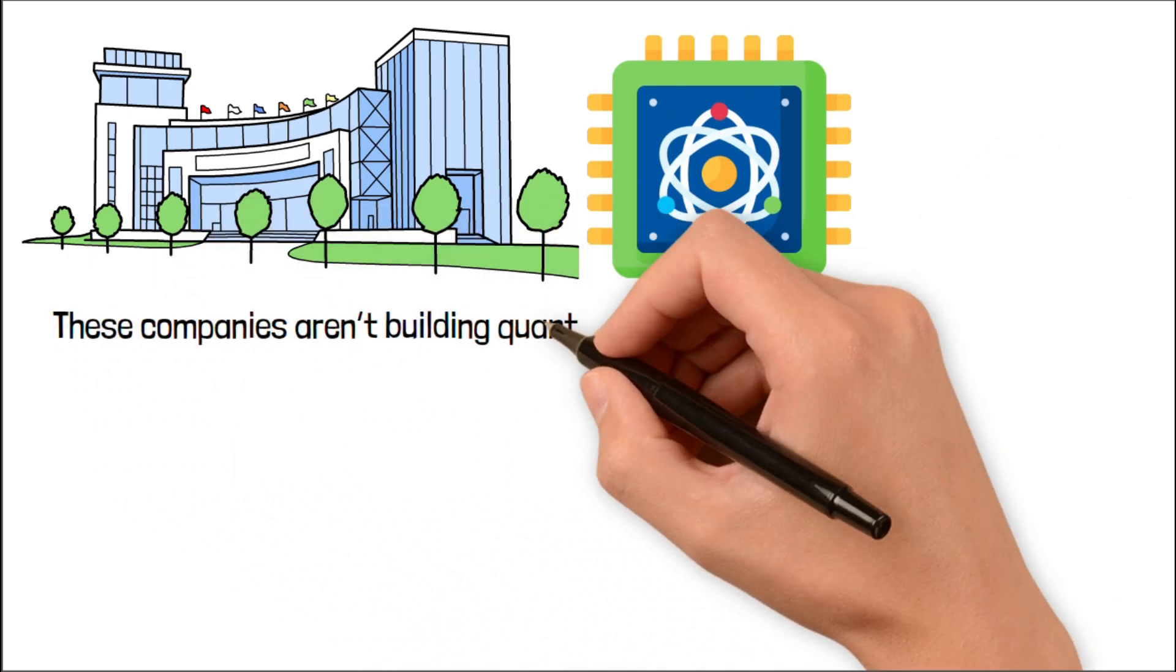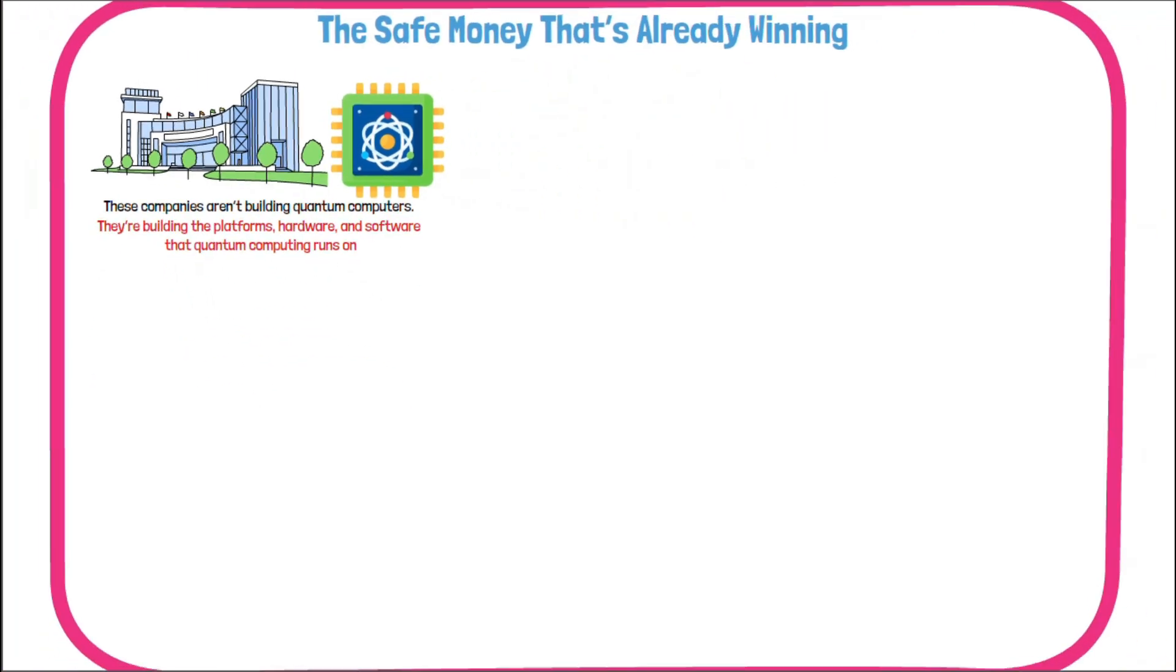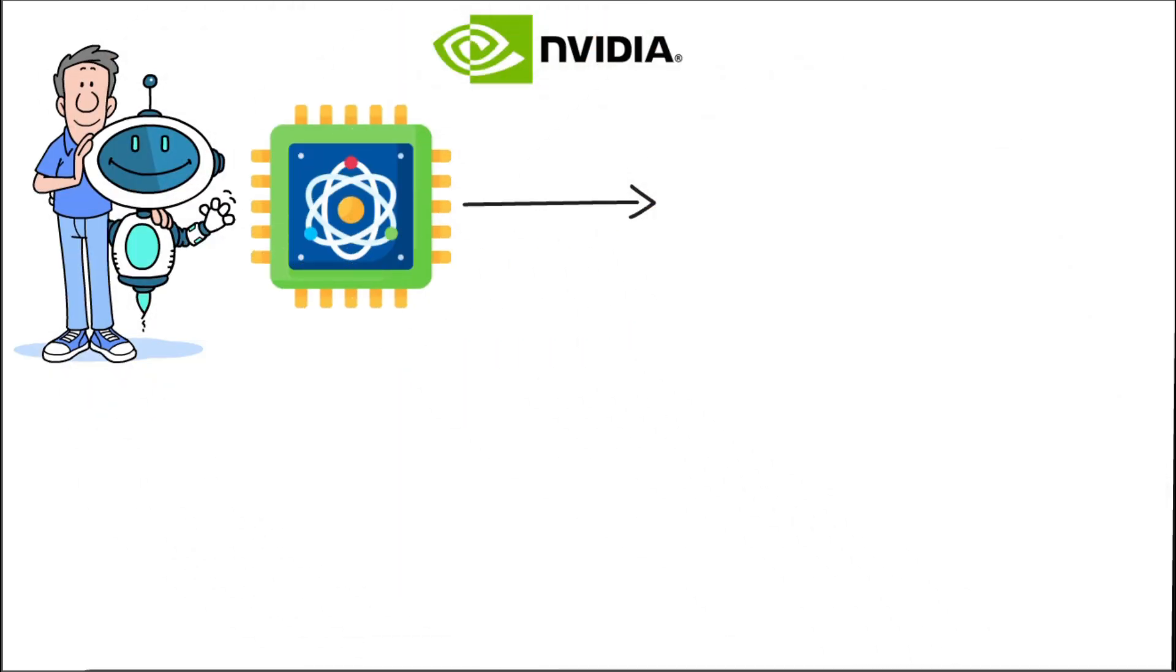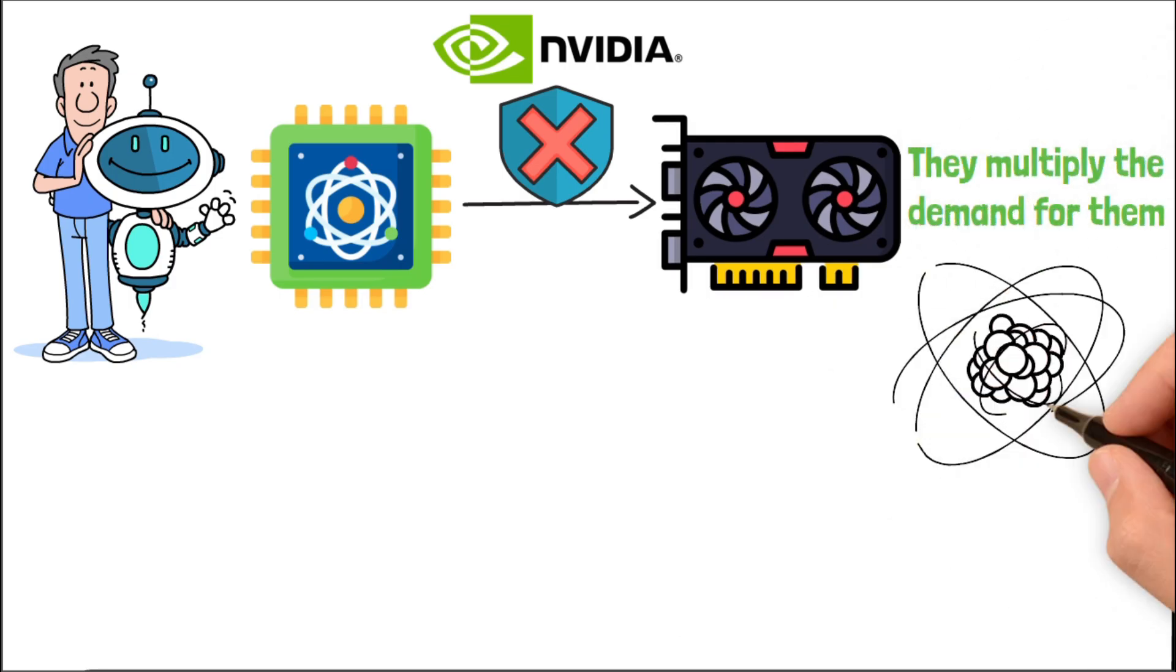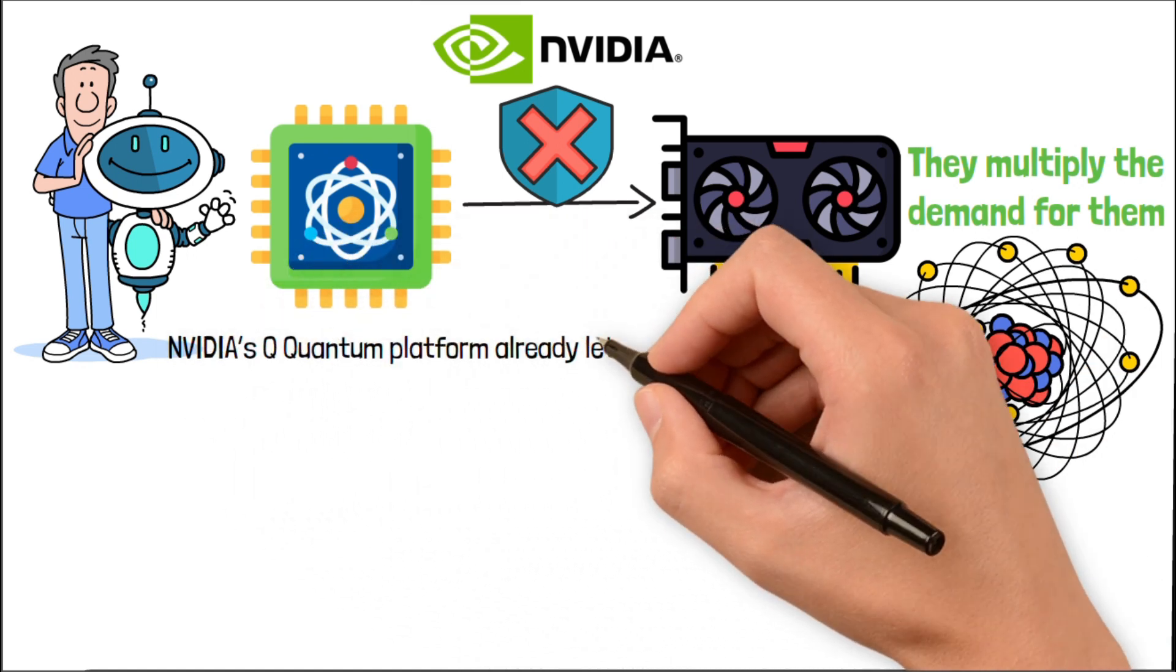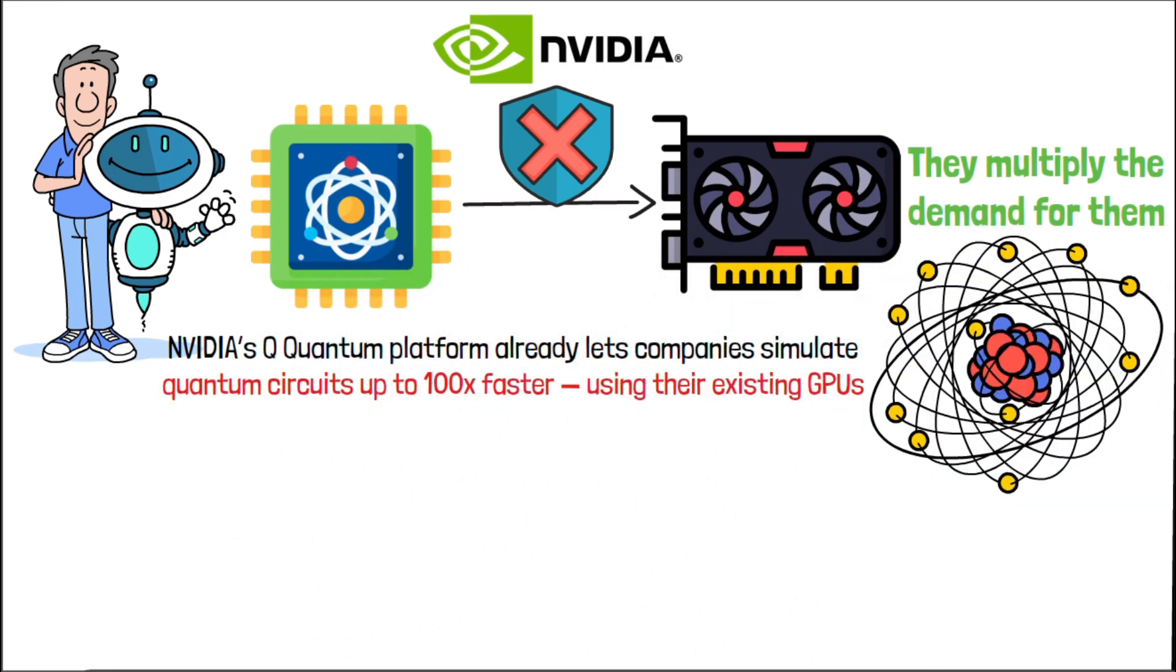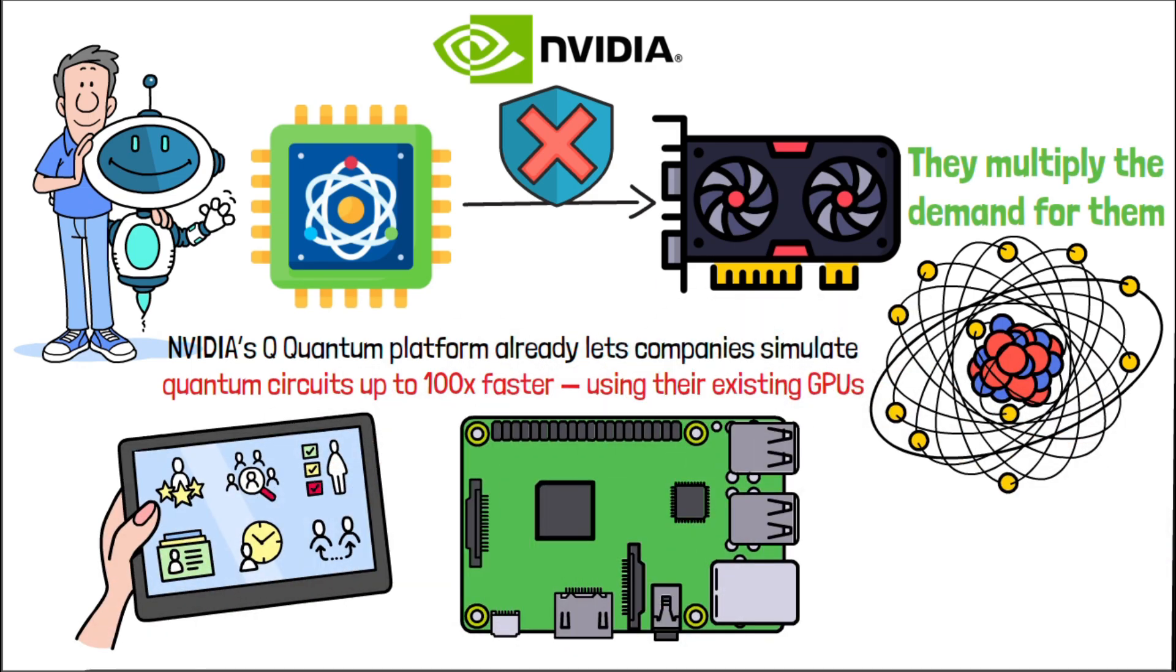These companies aren't building quantum computers. They're building the platforms, hardware, and software that quantum computing runs on. And they're getting paid today. Let's start with NVIDIA. Everyone knows them for AI and GPUs, but here's what most investors miss. Quantum computers don't replace GPUs. They multiply the demand for them. Every quantum experiment still needs massive classical computing for simulation, control, and error correction. NVIDIA's Q-Quantum platform already lets companies simulate quantum circuits up to 100 times faster using their existing GPUs. And before most companies even touch a quantum processor, they're testing algorithms on NVIDIA hardware.